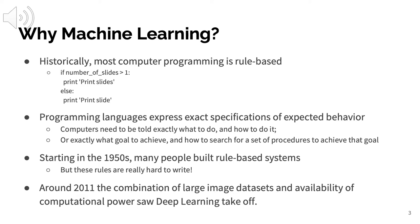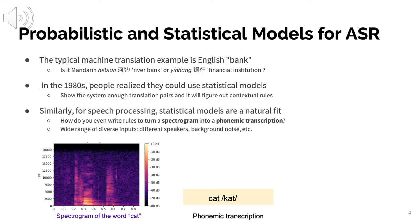About a decade or so ago, deep learning emerged, which was much more powerful for language technology purposes. For example, in machine translation, the English word 'bank' has two meanings — a river bank or a financial institution. In Mandarin, river bank is 'hé biān' and the financial institution is 'yínháng' — very different words. Writing a rule to disambiguate these is obviously quite hard. Dating back to the 1980s, people realized they could use statistical models where you show the system many translation pairs, and it figures out the rules — which was the birth of machine learning.